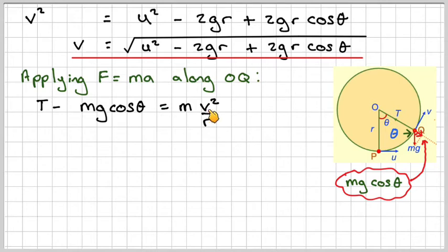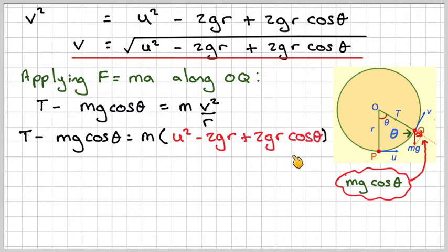And that's equal to the mass times the acceleration. So, the acceleration for circle motion is V squared over R. We've got an expression here for V squared. So, we'll take that and substitute it in. So, we've got T minus M G cos theta is equal to M, U squared minus 2G R plus 2G R cos theta divided by R.